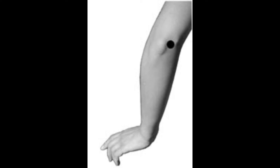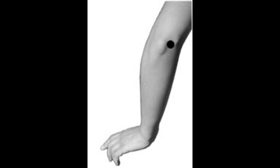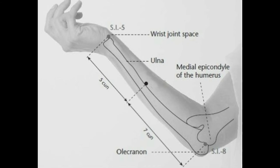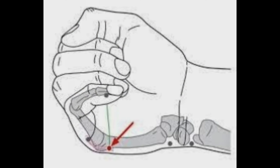Small Intestine 8, or Xiao Hai, is the He-sea point of the small intestine meridian. It is most easily located while the elbow is bent — you can see it on the picture right now. Indications include pains in the little finger, pain in the elbow, pain in the area of the scapula and back, edemas of the neck, and hearing problems.